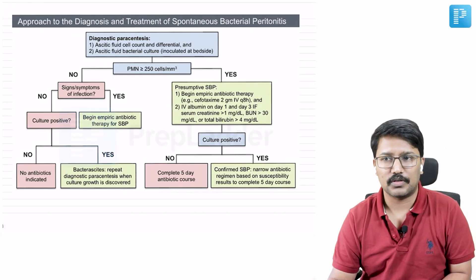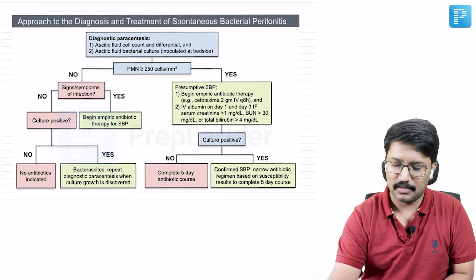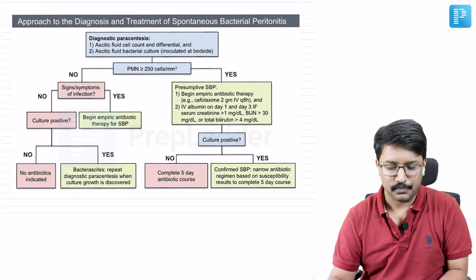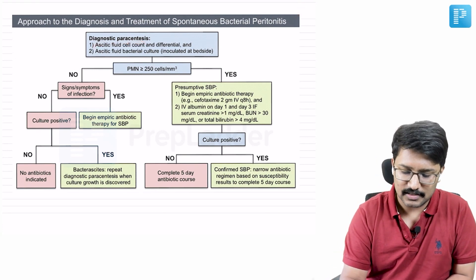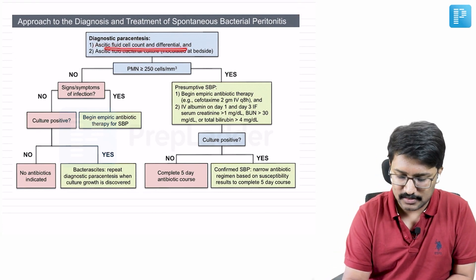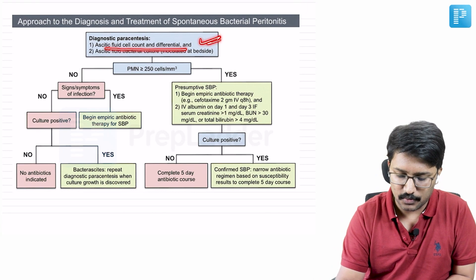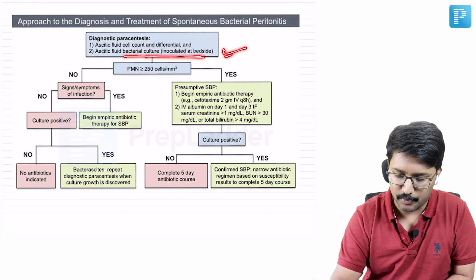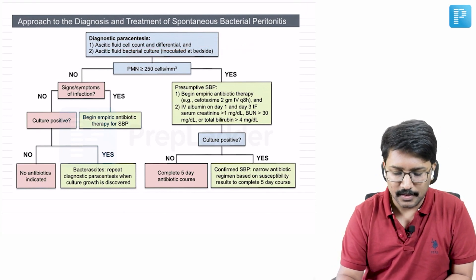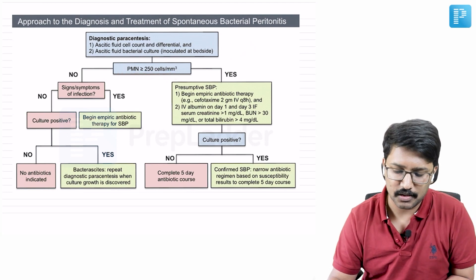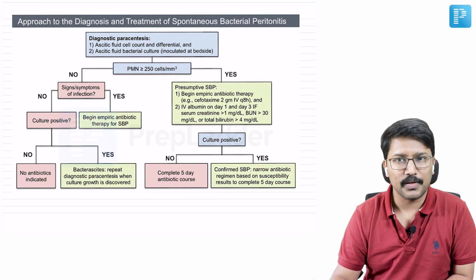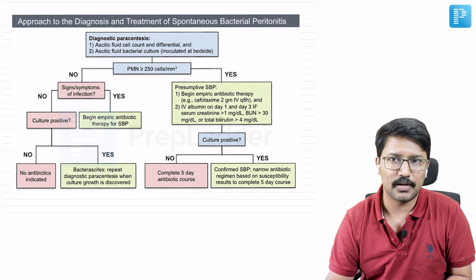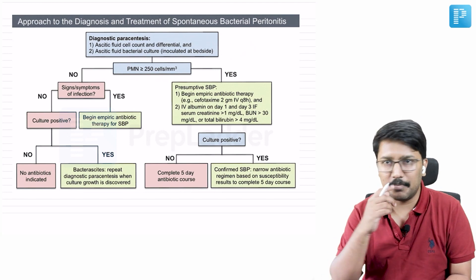When we have a suspected case of spontaneous bacterial peritonitis, we do a diagnostic paracentesis. Ascitic fluid cell count and differential count are taken into account, and we send the sample for culture. If the PMN is more than 250 cells per cubic millimeter, then the presumptive diagnosis of spontaneous bacterial peritonitis is confirmed.